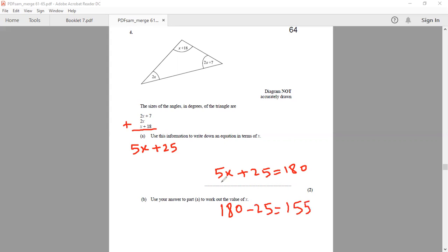And opposite of multiplying by 5 is dividing by 5, which will give me 31. Because 155 divided by 5 is 31. So my answer is going to be x is equal to 31 degrees.